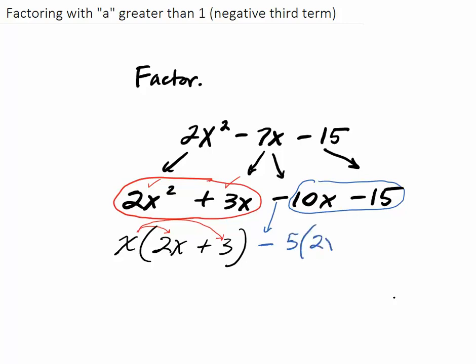So now I'm going to have a 2x, and then that's going to be a minus 3. Now let's double check that that really works. Does negative 5 times positive 2x give me a negative 10x? Absolutely. Does negative 5 times negative 3 give me a negative 15? Absolutely not.